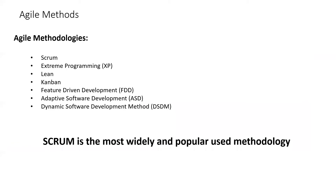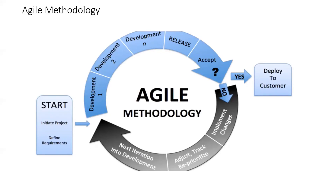Different Agile methodologies include Scrum, Extreme Programming, Lean, Kanban, Feature Driven Development, Adaptive Software Development, and Dynamic Software Development. Software mostly uses Scrum, while Kanban is majorly used in manufacturing. Lean is also a methodology that focuses primarily on removing waste and finds major application in manufacturing industries.